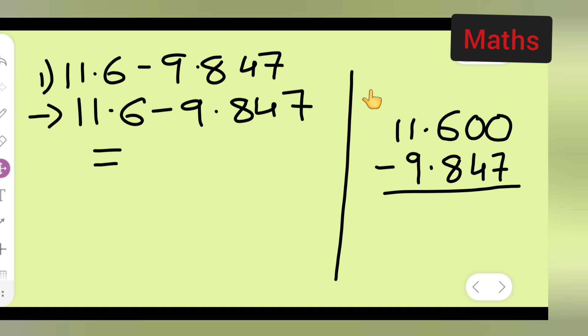So now what you're going to do here is carry 1 from here. So 10 minus 7 will give you 3. 9 minus 4 will give you 5,